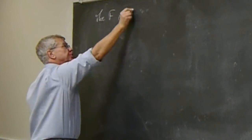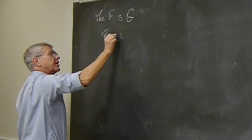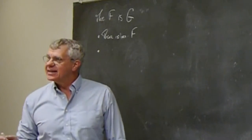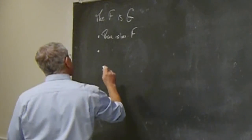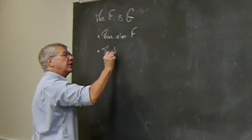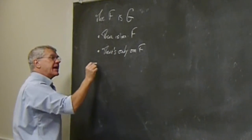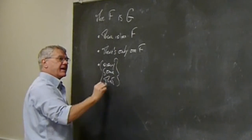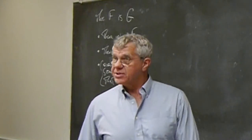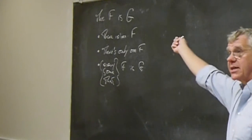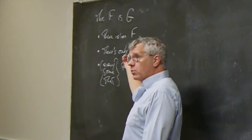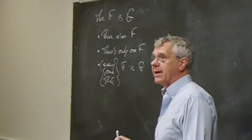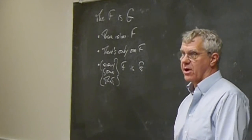We're trying to understand 'The F is G.' We've got: there is an F. That's going to follow — we don't have to state that independently. There's only one F — so we've got uniqueness here. And then we can say either every, some, or that F is G, because after all there's only one, so all of those end up being equivalent. So to say 'the father of Charles II was executed' is to say there is a father of Charles II, there's only one father of Charles II, and every father of Charles II was executed.